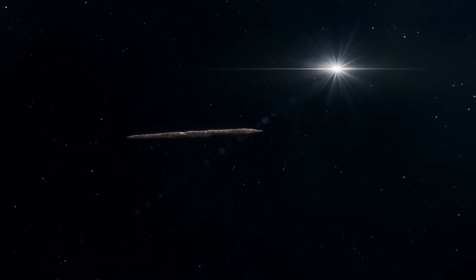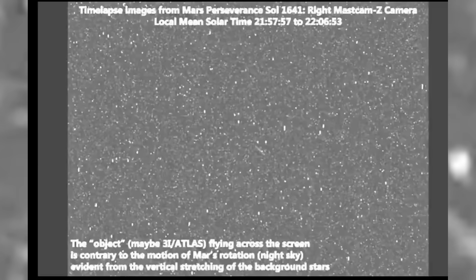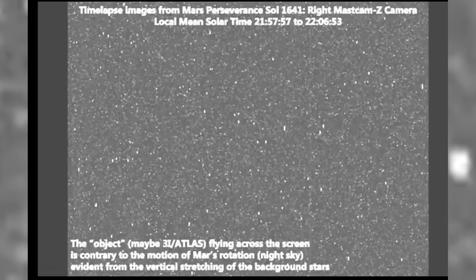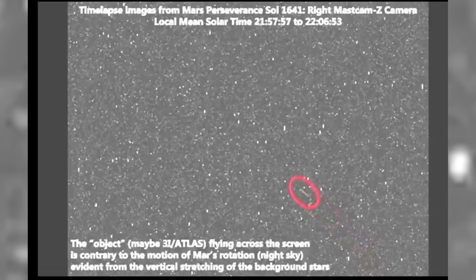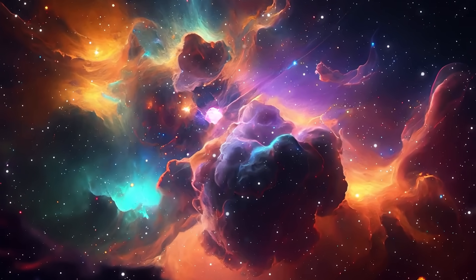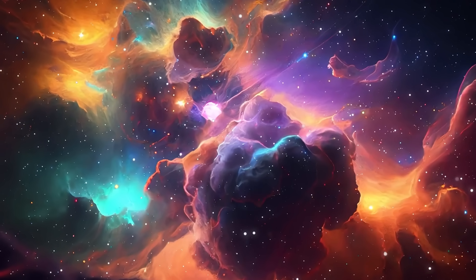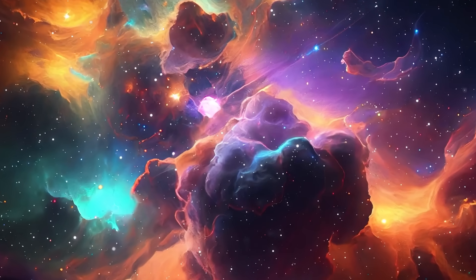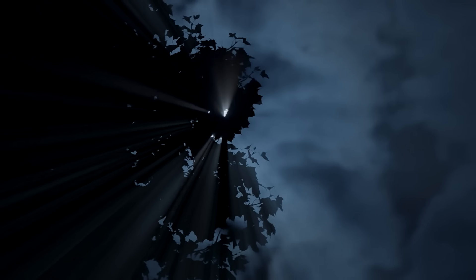When the final combined analysis was released, the language was careful but unmistakable. The data confirmed that 3i Atlas was composed primarily of carbon dioxide ice, that it had originated outside the solar system, and that it passed through on a one-time trajectory before heading back into interstellar space.